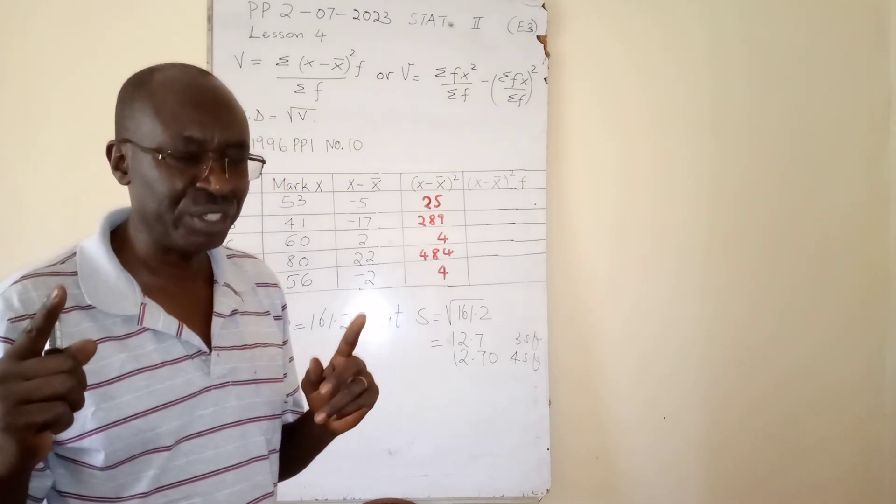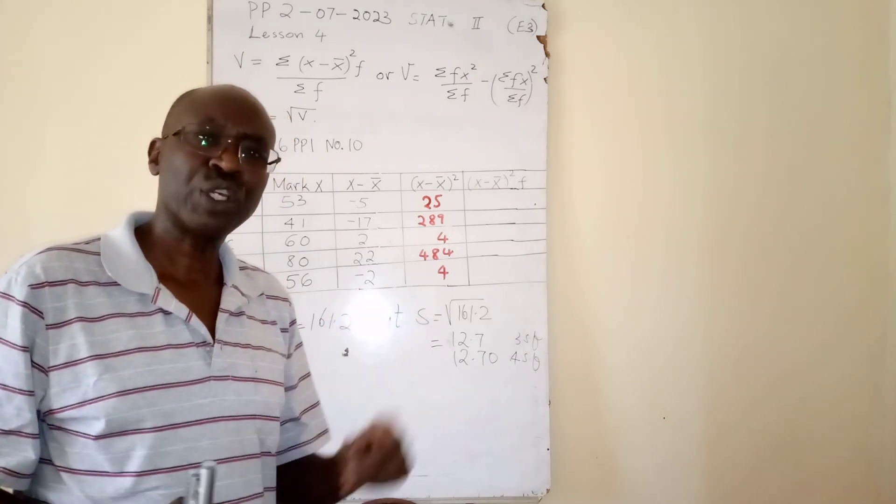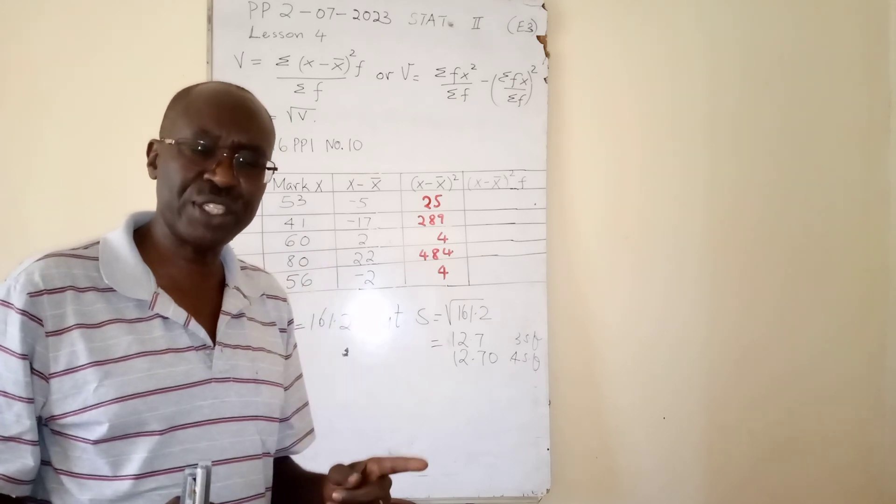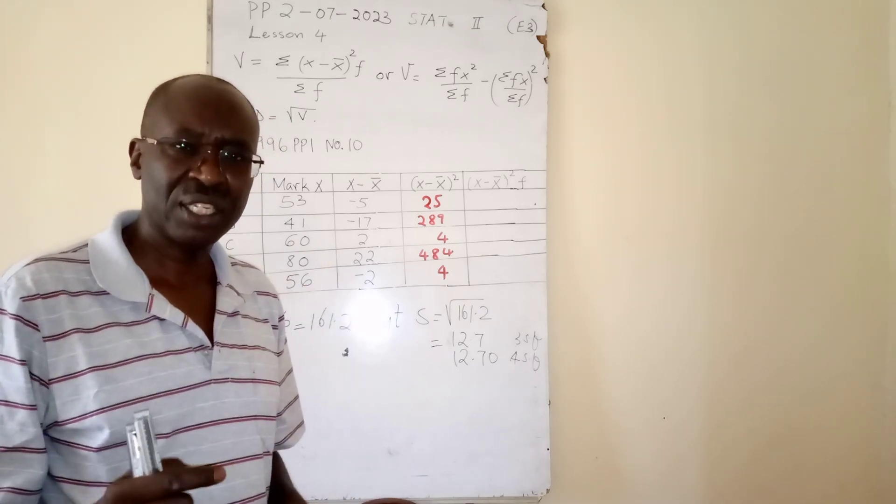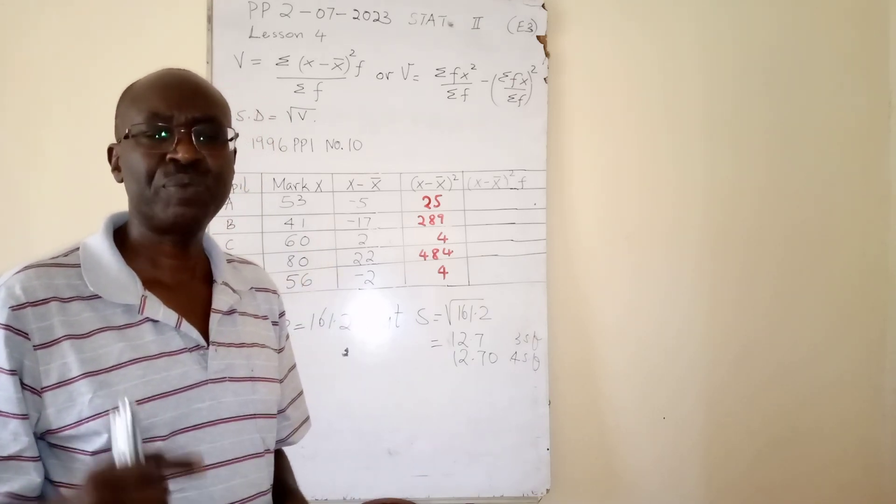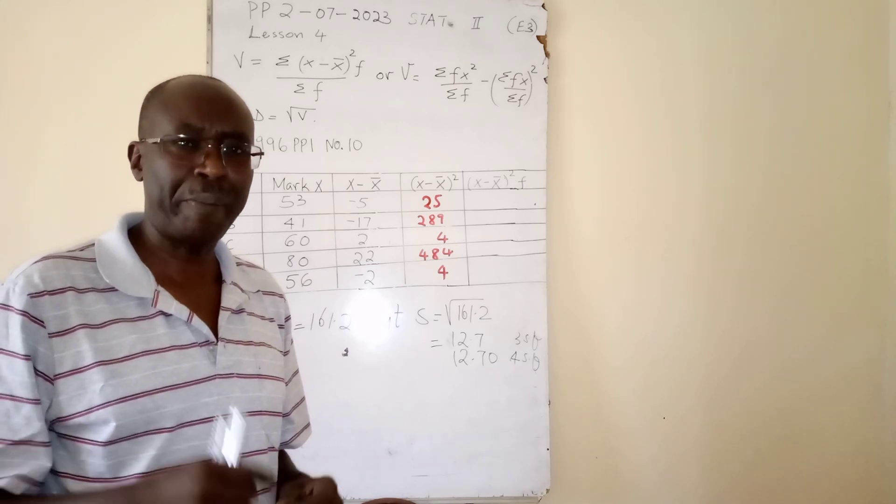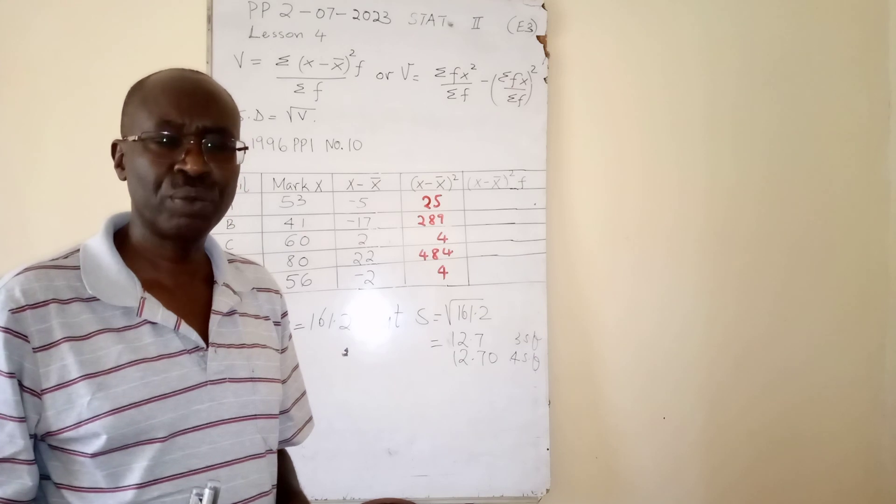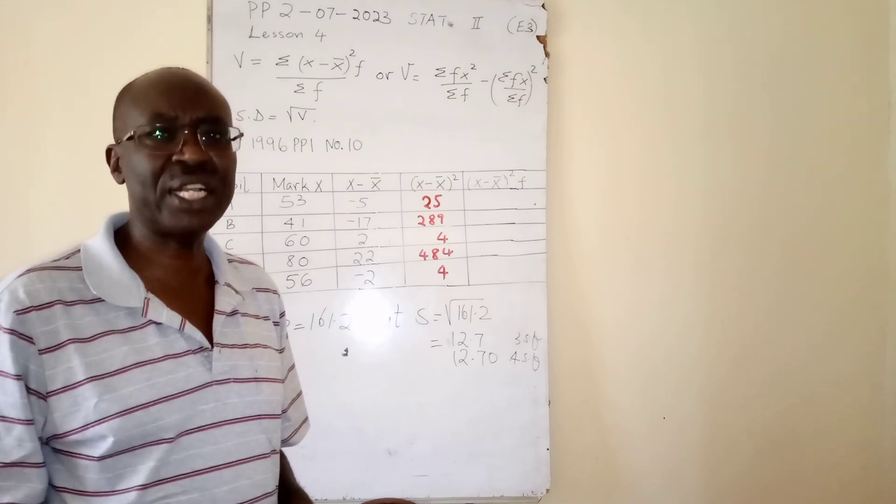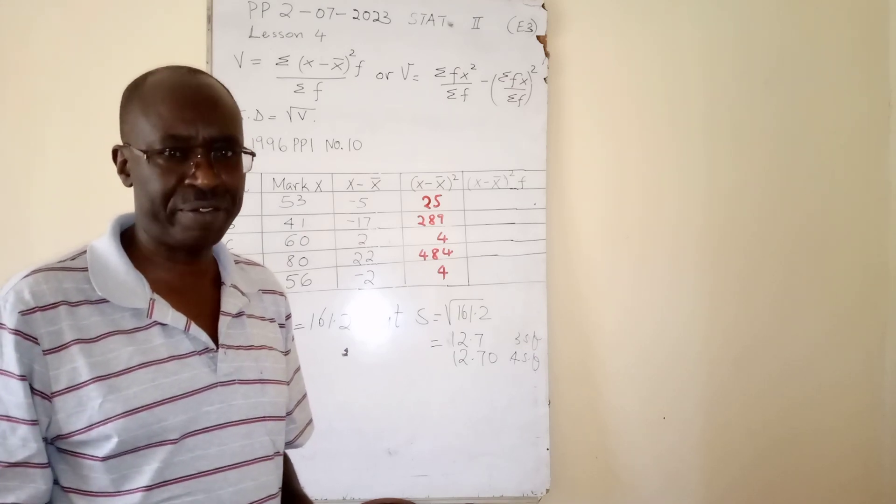We have another letter here, x̄, which means mean. From primary we call it average. Mean is equal to sigma fx over sigma f.